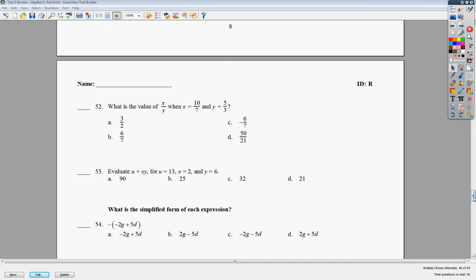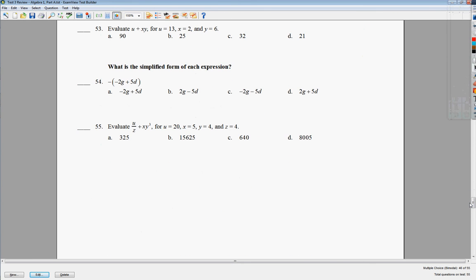Number 54 is a distributive property question. Really not a very difficult one unless you forget to write something down to remind yourself it's negative 1 in front. Then it's negative 1 times negative 2. You get 2g. Negative 1 times 5 gives you minus 5d. So I end up with b, the answer. Not a big deal.